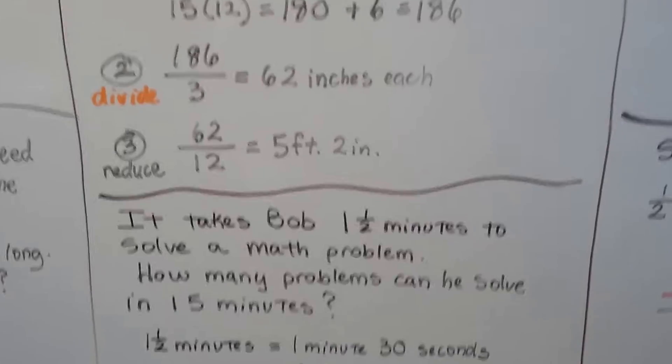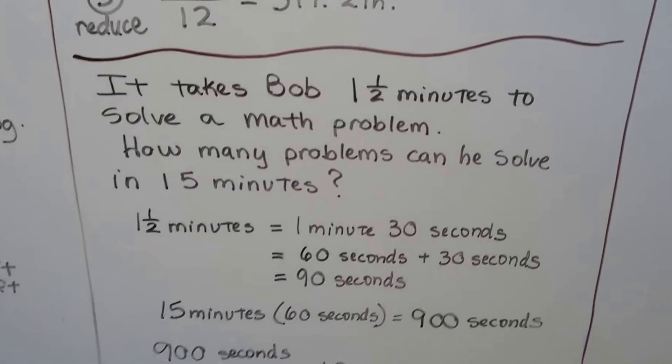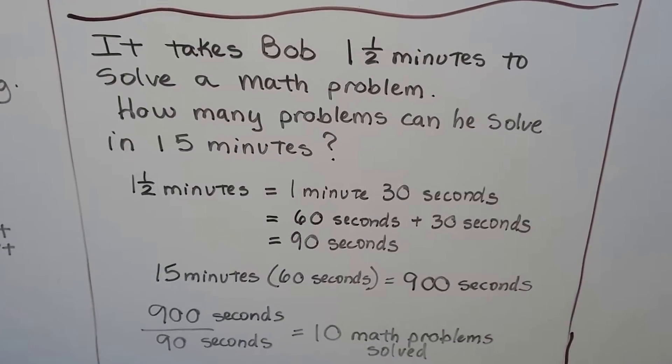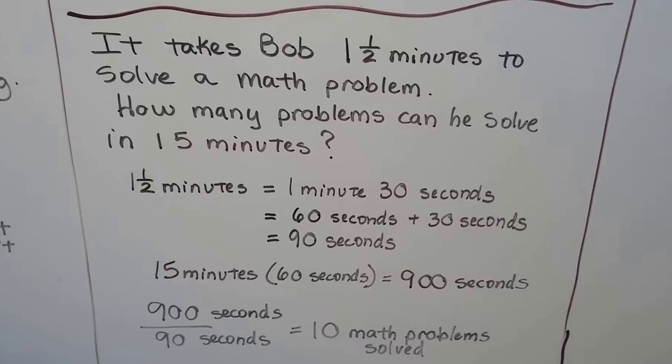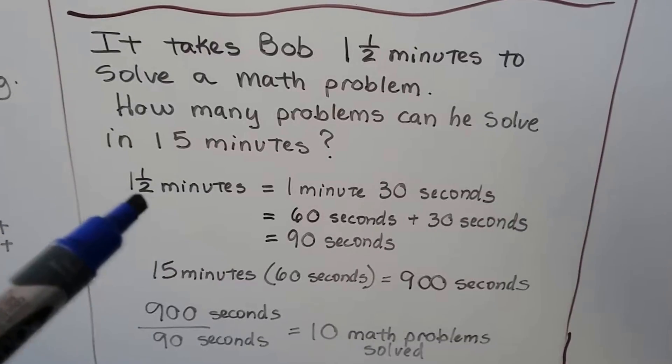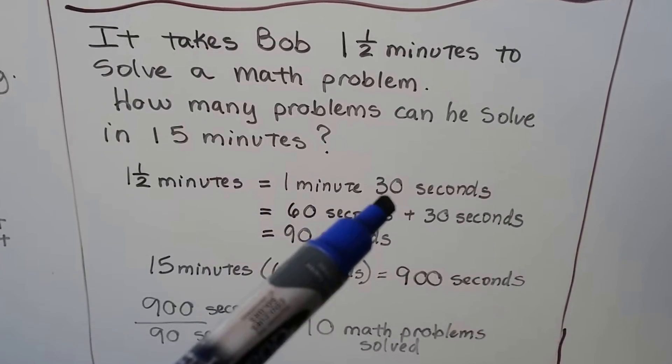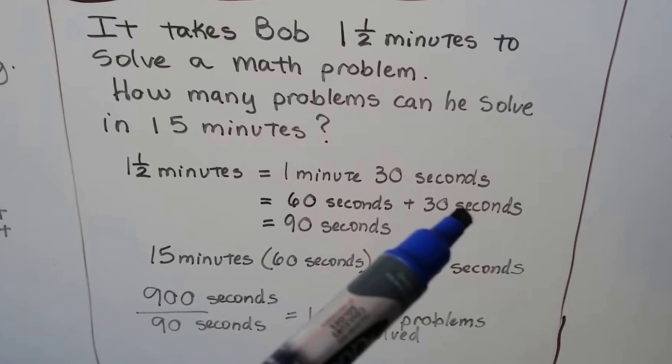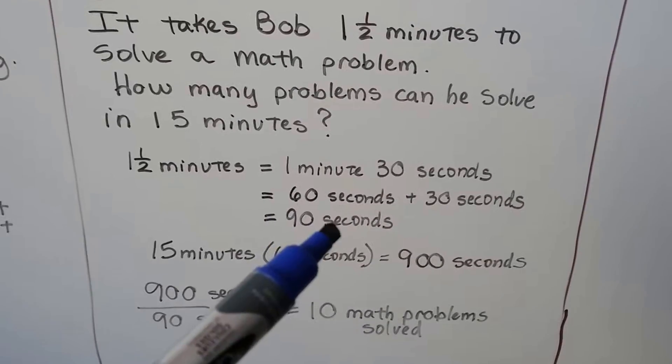It takes Bob 1 and a half minutes to solve a math problem. How many problems can he solve in 15 minutes? Well, 1 and a half minutes is equal to 1 minute and 30 seconds. That's 60 seconds plus 30 seconds, isn't it? That's 90 seconds.